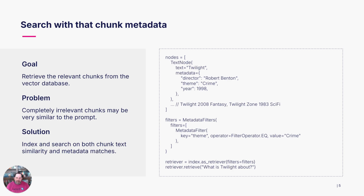Well, it turns out there's lots of movies called Twilight, and even more movies that include the word Twilight. So if we were to do an embedding search, chances are we're going to get chunks related to all these movies, and probably an incoherent answer.